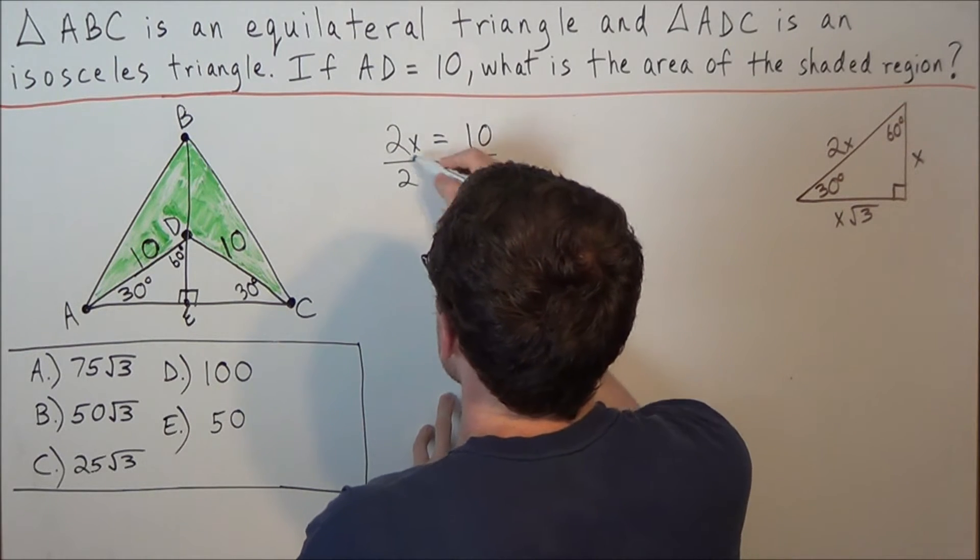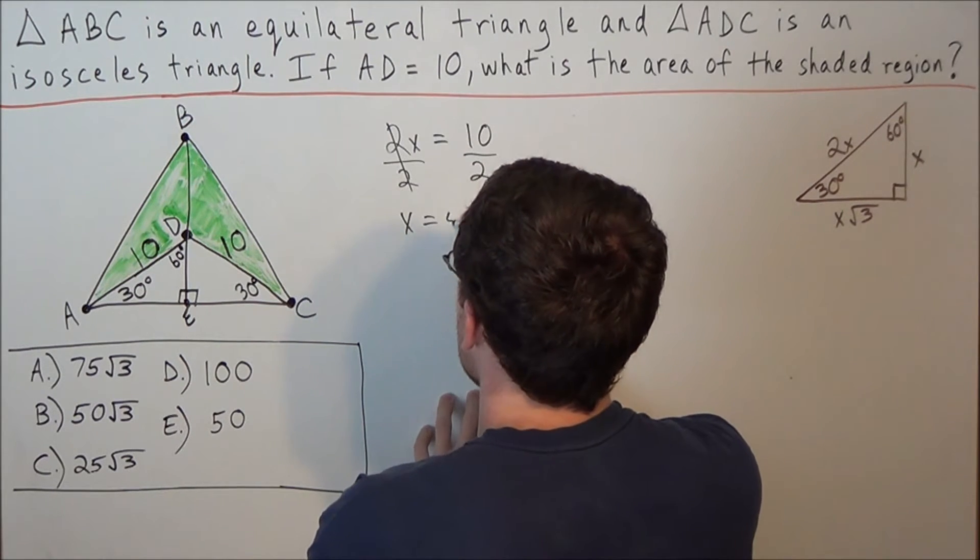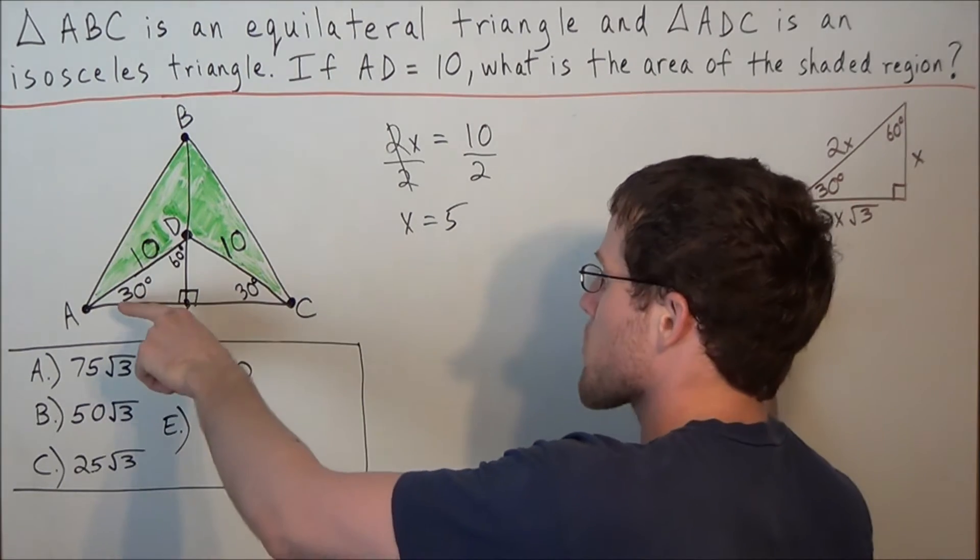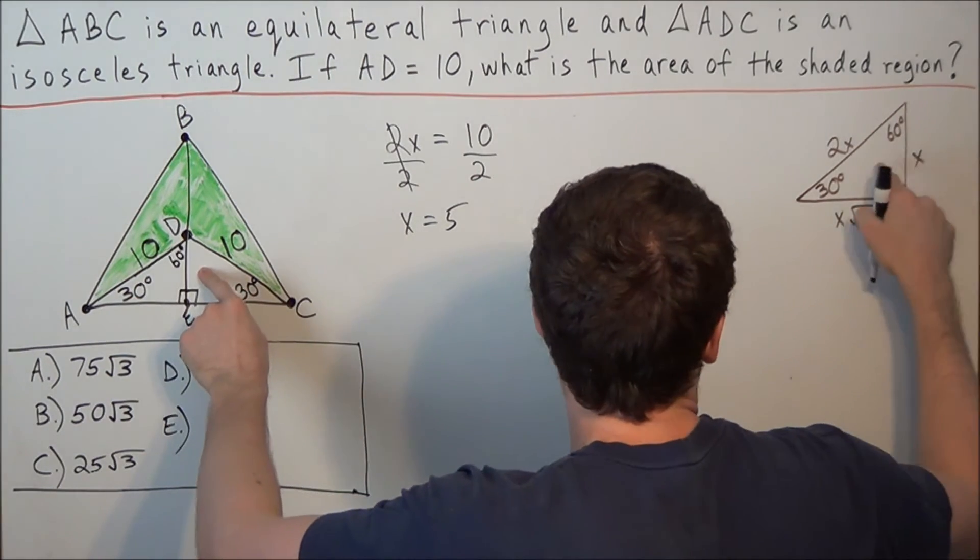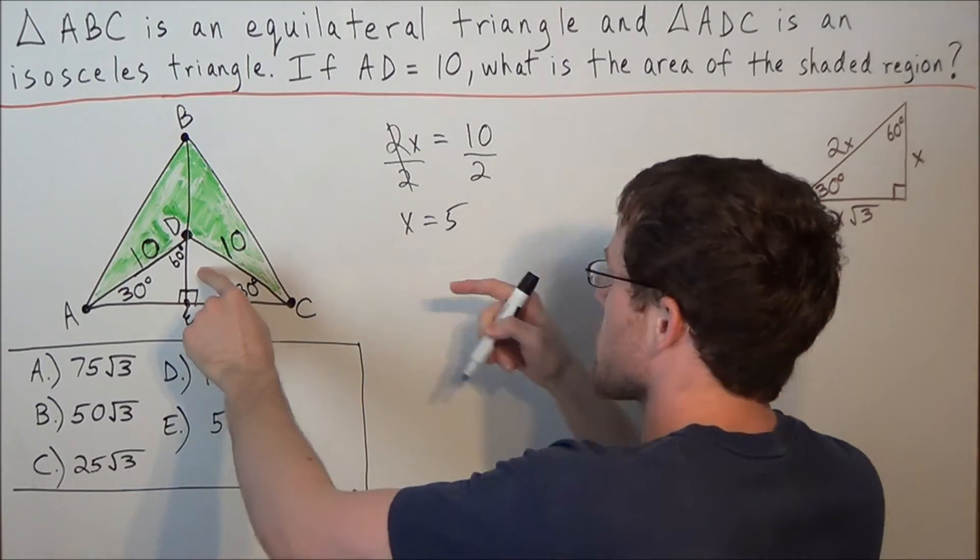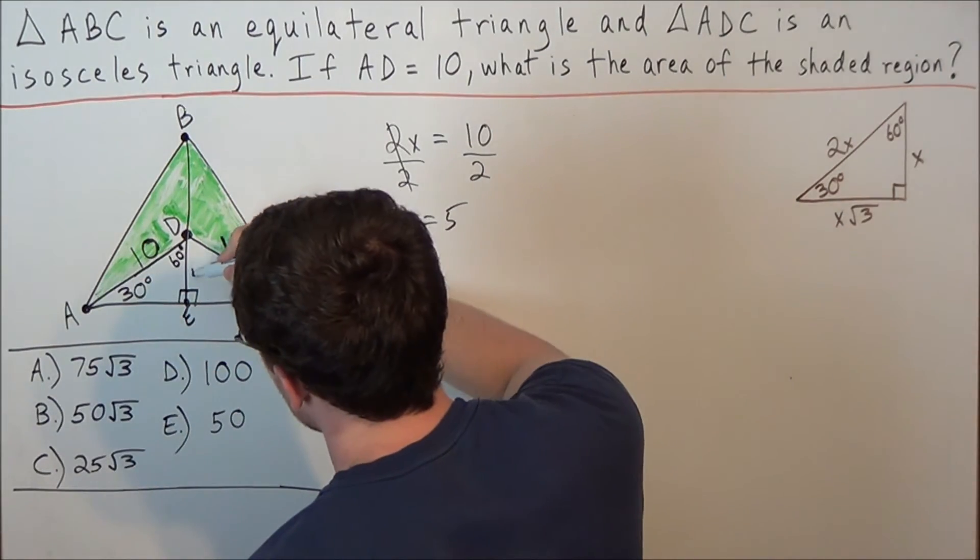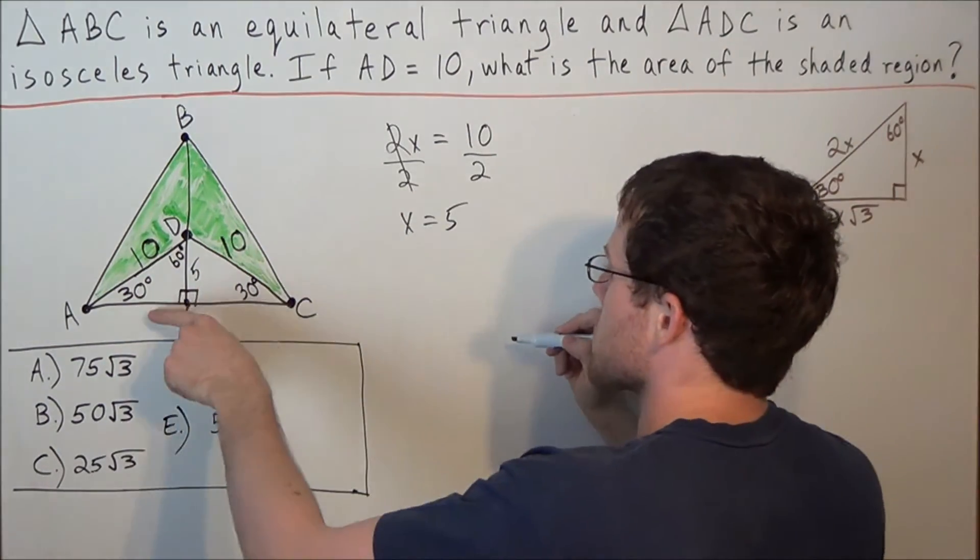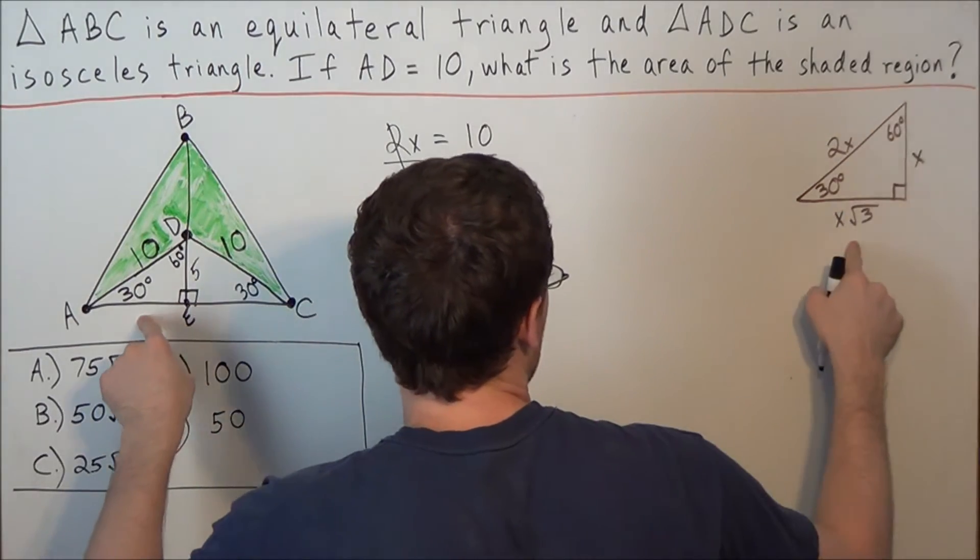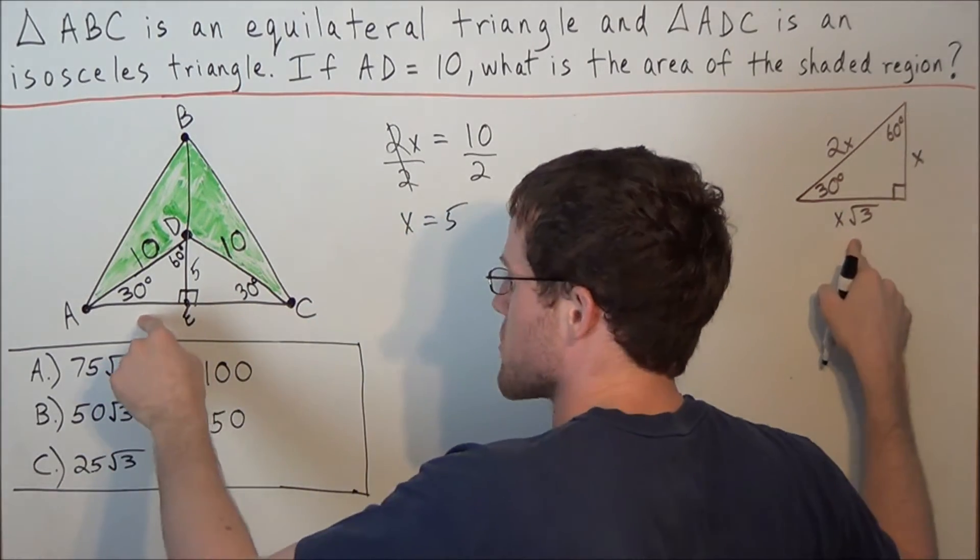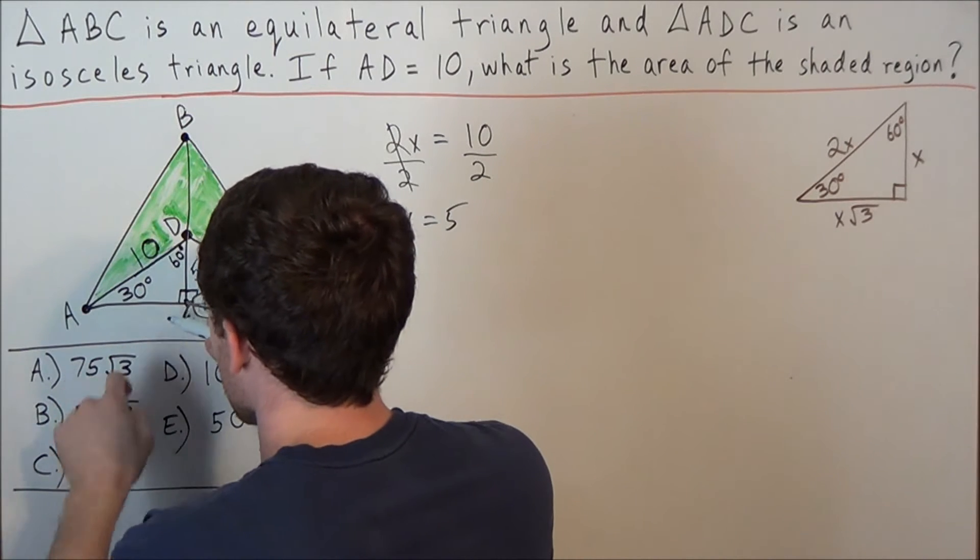And remember, opposite the 30 degree angle is our side x. So we could set this piece here equal to 5. And opposite the 60 degree angle is x radical 3. So we could label AE as 5 radical 3.